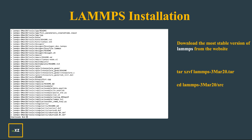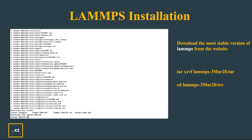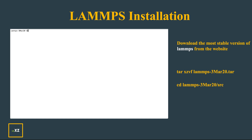Now go to the source folder in the LAMPS directory. Press cd, go to the 3rd March 2020 folder — this is the LAMPS version you installed. Press list and you can see all the required files and executable folders are present.